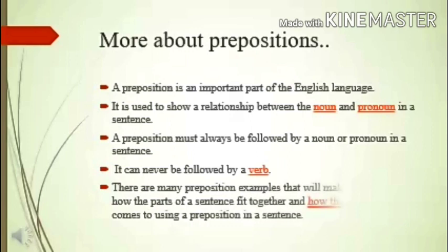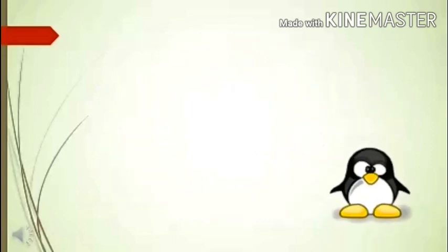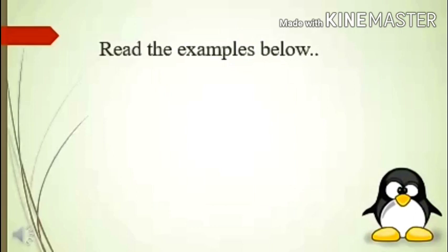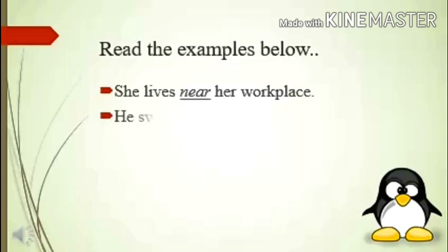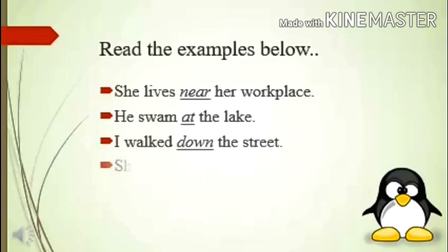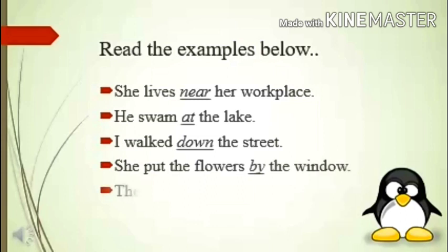There are many preposition examples that will make it easy to understand how the parts of a sentence fit together and how the rules apply when using a preposition. Read the examples below: She lives near her workplace (underline the preposition: near). He swam at the lake (at). I walk down the street (down). She put the flowers by the window (by). The food was placed on the table (on).